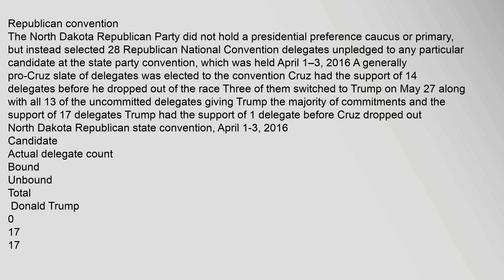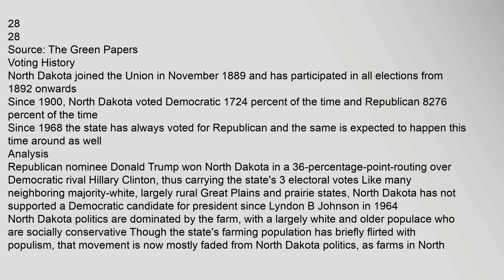The North Dakota Republican Party did not hold a presidential preference caucus or primary, but instead selected 28 Republican National Convention delegates unpledged to any particular candidate at the state party convention, held April 1–3, 2016. A generally pro-Cruz slate of delegates was elected. Cruz had the support of 14 delegates before he dropped out; 3 of them switched to Trump on May 27, along with all 13 uncommitted delegates, giving Trump the majority with 17 delegates. At the North Dakota Republican state convention, April 1–3, 2016: Donald Trump had 0 bound and 17 unbound for 17 total; Ted Cruz had 0 bound and 11 unbound for 11 total; John Kasich had 0; total delegates: 28.